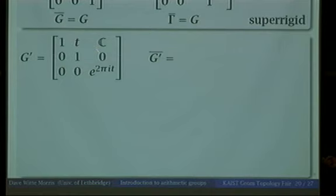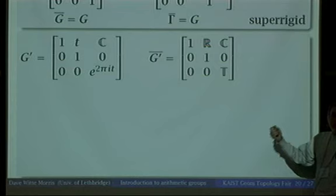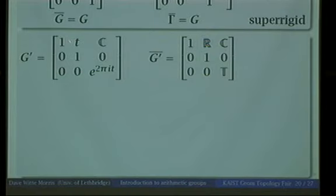So when you take the Zariski closure, you lose the connection between the two entries — they become independent. When you look at the Zariski closure, you can put any real number in one entry, and the number in the bottom corner is independent of what you put there. So in the Zariski closure, these two become decoupled — they become independent, giving a Cartesian product. It's like if this map were some terrible measurable function: the closure of the graph would be the full product.